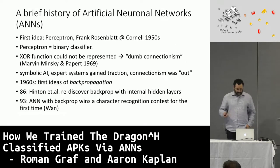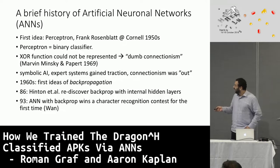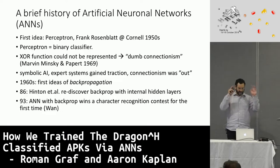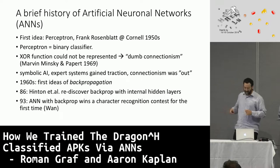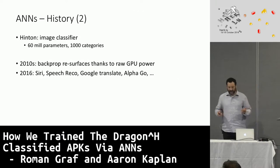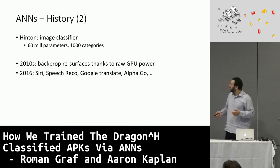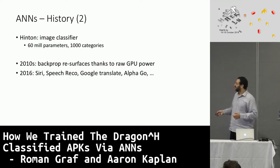Brief history: this whole field, especially artificial neural networks, started way back when with the perceptron. It was pushed back in the 60s and called 'dumb connectionism,' so symbolic AI came to be instead. Backpropagation was actually invented twice. But then something really happened in the 2000s with the advances in GPU computing power and tensor processing units, leading to really great successes and progress.